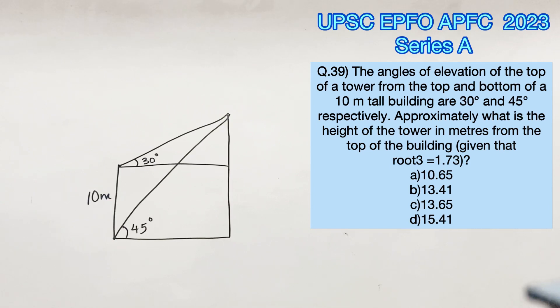Approximately what is the height of the tower in meters from the top of the building? Therefore we'll have to find this height. We know that this height is going to be equal to 10 meters as well.